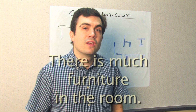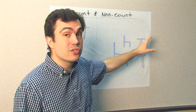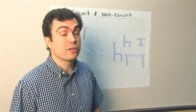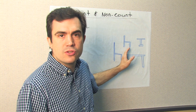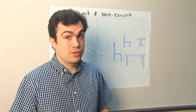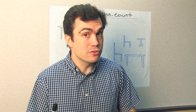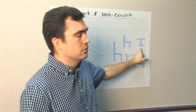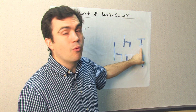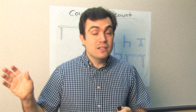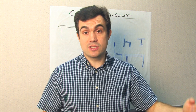Or we could say, there is much furniture in the room. How much furniture is there? There is much furniture in the room. But how many chairs are there? There are two chairs. How much furniture is there? There's much furniture. How many tables are there? There are two tables — one big, one small. How many we use for count nouns. How much we use for non-count nouns.